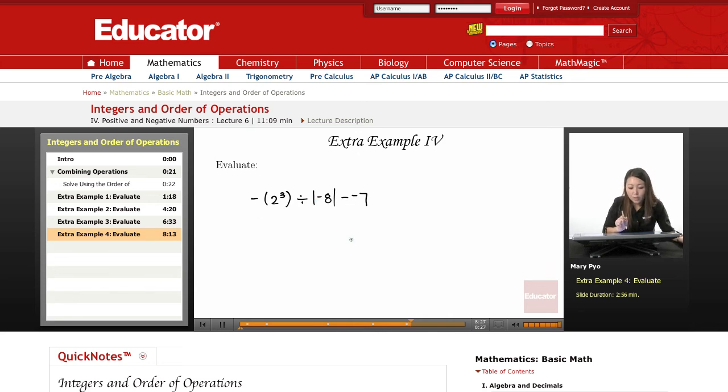So the first thing I want to solve out is the parentheses, which is right here. So 2 cubed. 2 cubed, be careful, 2 cubed is not 2 times 3. This is 2 times 2 times 2.